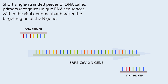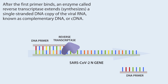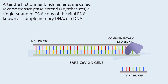Short, single-stranded DNA called primers recognize unique RNA sequences within the viral genome that bracket the target region of the N-gene. After the first primer binds, an enzyme called reverse transcriptase extends and synthesizes a single-stranded DNA copy of the viral RNA, known as complementary DNA, or cDNA.